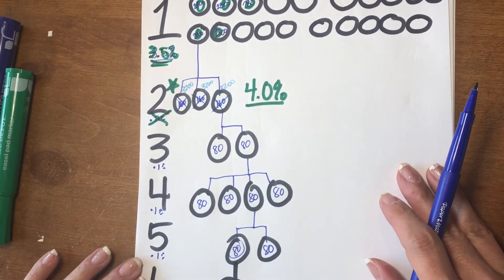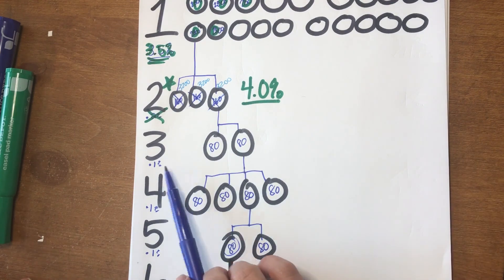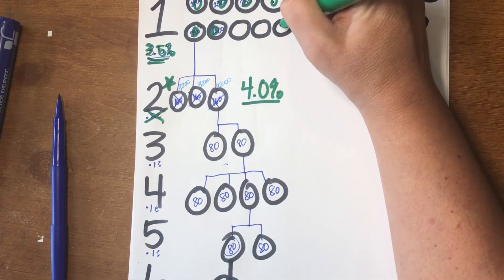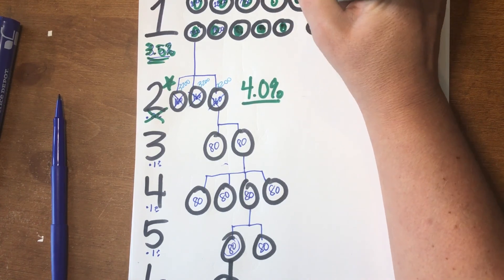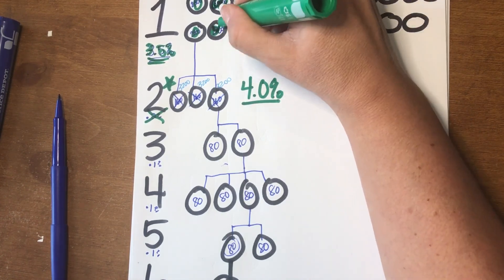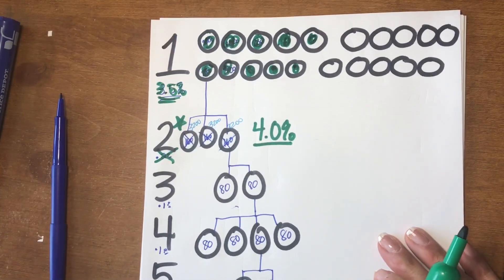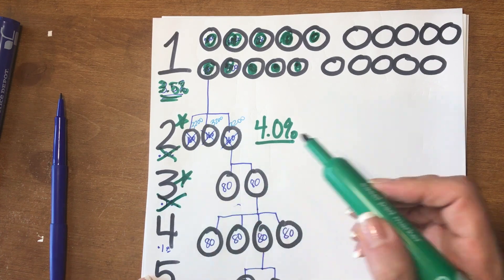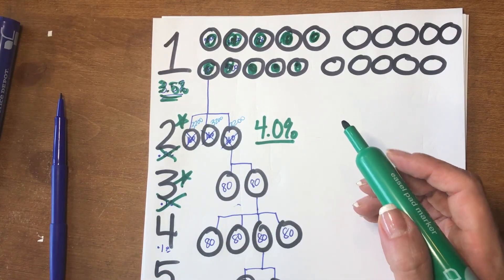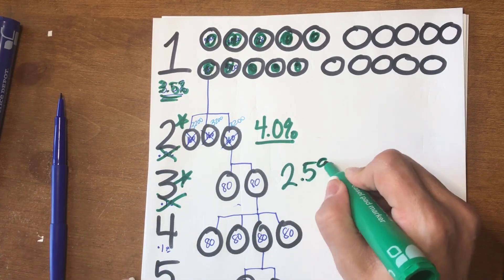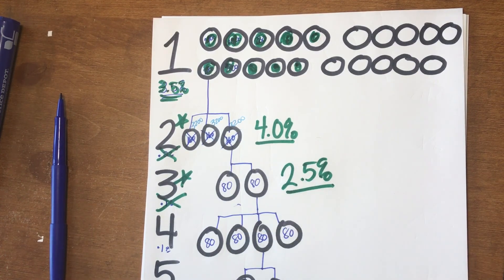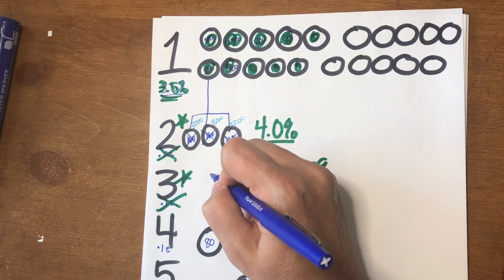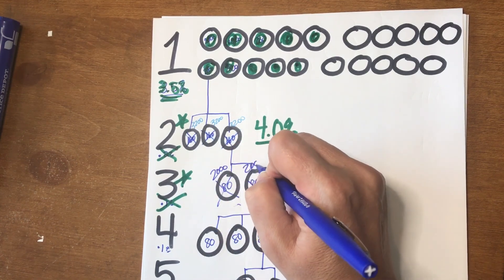The next tier would be tier three. Once you've attracted ten agents in your line one, that will open up your level three. That 0.1% changes to 2.5%, which then changes those $80 into $2,000 for each one of those agents.